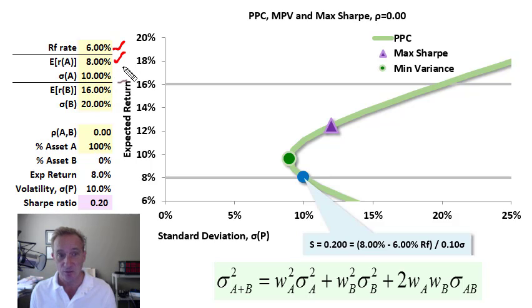Asset A has an expected return of 8% and a standard deviation or volatility of 10%, as usual denoted with sigma. Asset B has twice the risk and return, so 16% return and 20% volatility. This is the classic illustration you see in a lot of finance textbooks, and we're operating in the mean-variance framework.